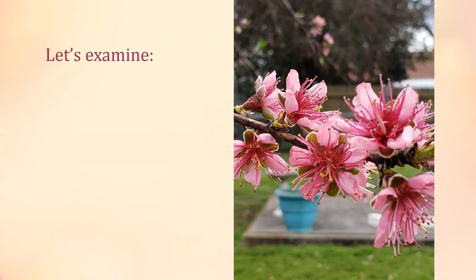Page 304 asks you to look at four different flowers. Flower number one is a peach from my backyard. Number of petals: just pick one flower and count — there are five petals. You can also see sepals between the petals: one, two, three, four, five — so there are five sepals on this plant.